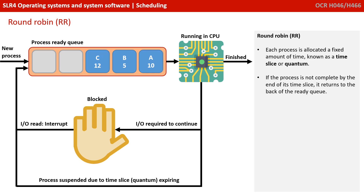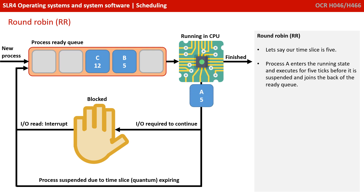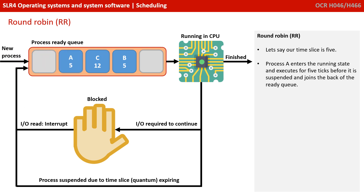The next algorithm to consider is round robin. Here, each process is allocated a fixed amount of time known as a time slice or quantum. If the process isn't complete by the end of its time slice, it returns to the back of the ready queue. Let's assume for simplicity our time slice is 5. Process A enters the running state, executes for 5 ticks, before it's suspended and joins the back of the ready queue.